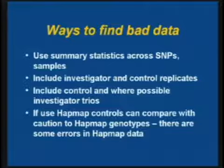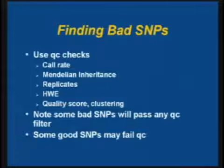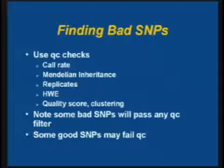Finding bad SNPs: QC metrics include call rate — did most samples get called for this SNP? Mendelian inheritance — if you have trios, did the child inherit one allele from each parent? Replicates — did it type the same way twice? Hardy-Weinberg equilibrium — are the genotype proportions close to expected? That's a little tricky; it depends on your population and whether you'd expect it to be in Hardy-Weinberg equilibrium. There are also quality scores and clustering metrics for many platforms. There are some bad SNPs that will pass any QC filter, and some good SNPs that might fail — it's always a trade-off.